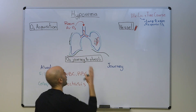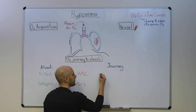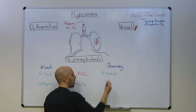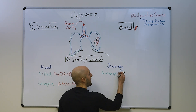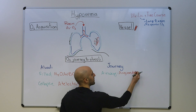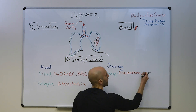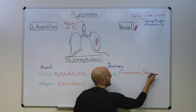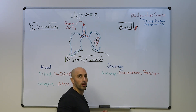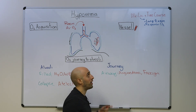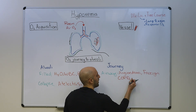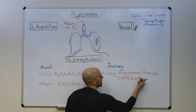The journey starts with oxygen entering the airway. If someone has an upper airway obstruction — for example, from angioedema, anaphylaxis, or even a foreign object — this can lead to hypoxemia. There's other pathology in the airway that can lead to hypoxemia, including COPD, asthma, and bronchiectasis.